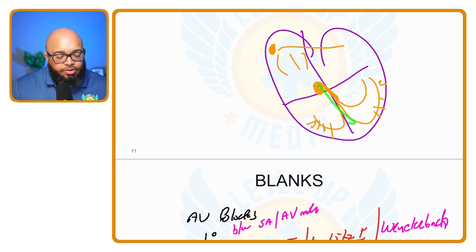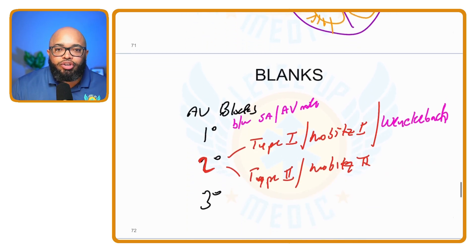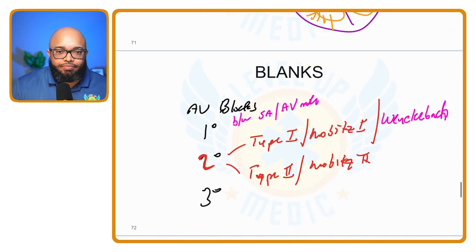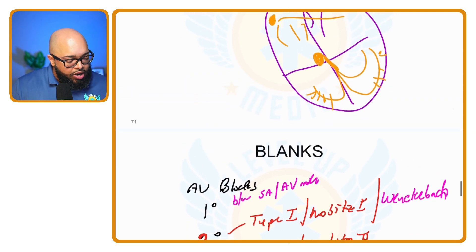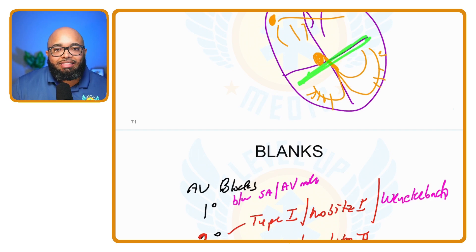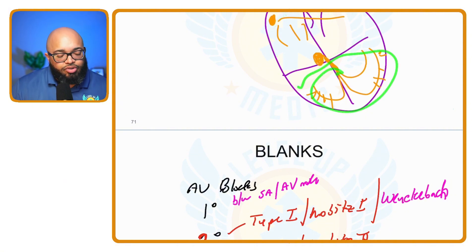Second degree type two is usually where the block is at the bundle of His — a partial block there, with some signal still able to go through. A third degree block is where you have a complete block at the AV node, so no signal is able to pass freely from the atria to the ventricles.